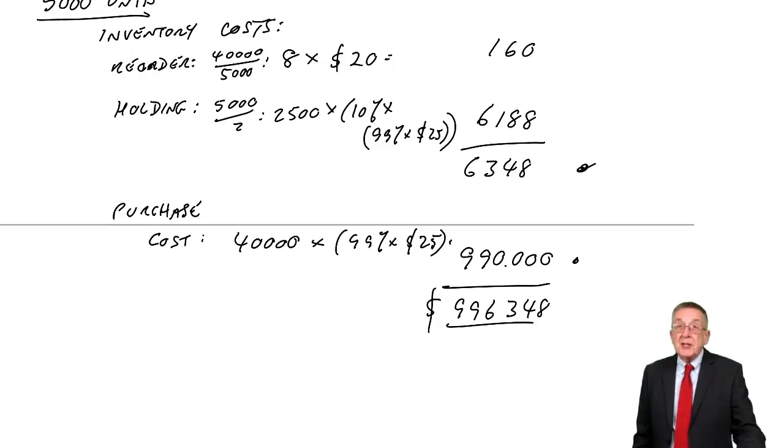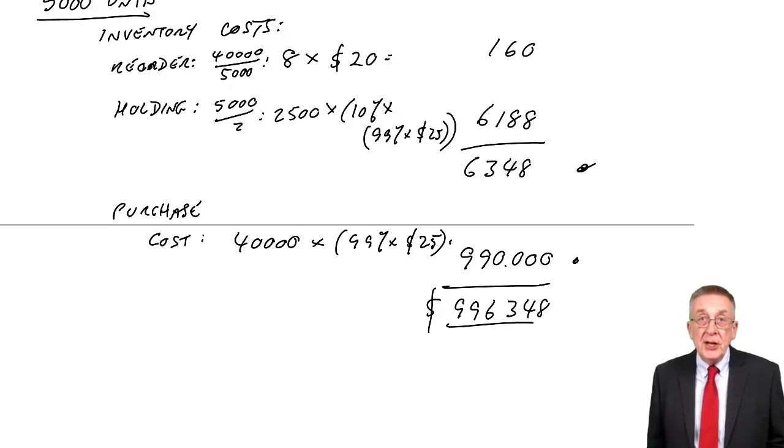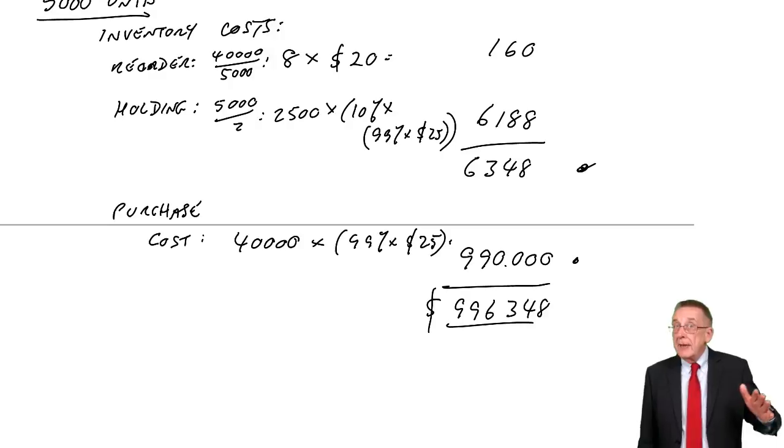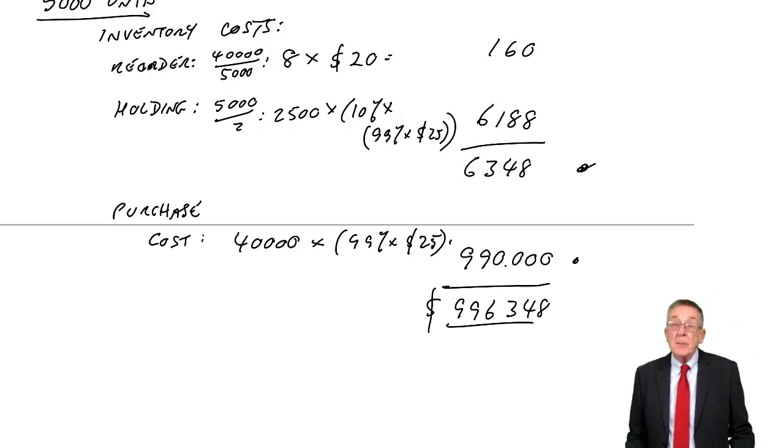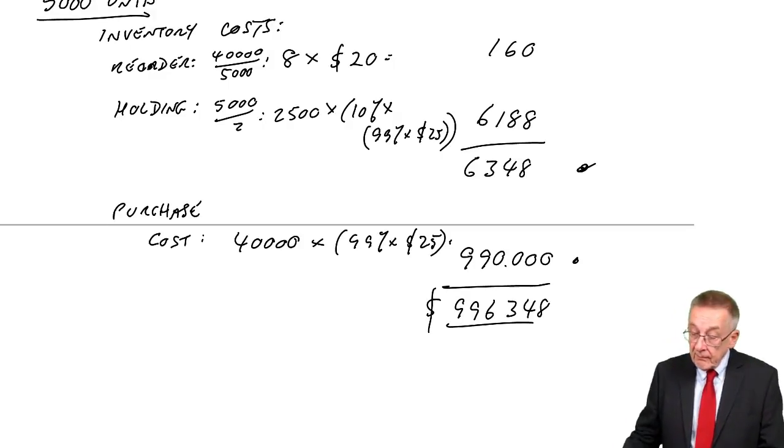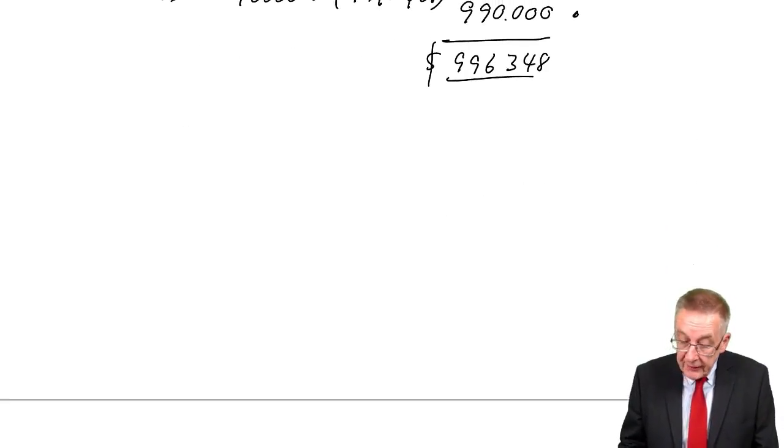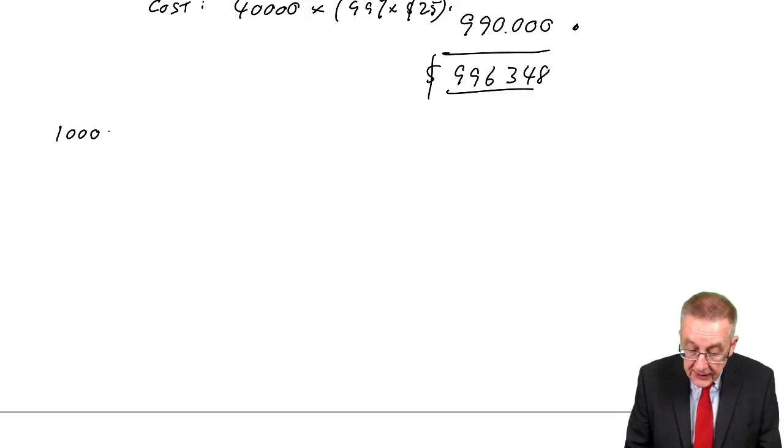And so for this question, the only other order quantity that could possibly be cheaper would be 10,000 units. Because although the inventory costs will be a lot higher, we get a bigger discount, the purchase costs will be lower. So let's try, finally, 10,000 units.